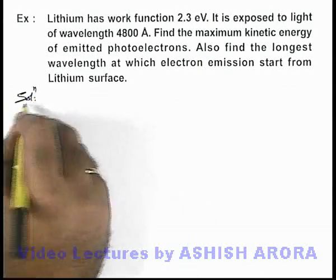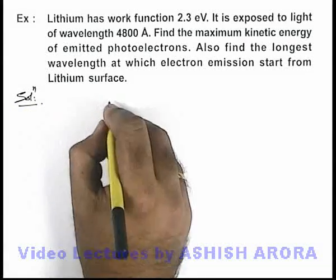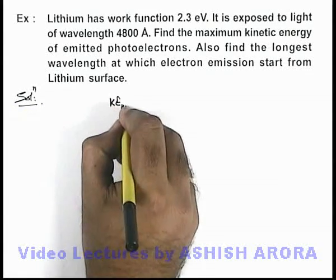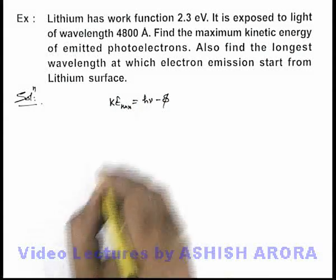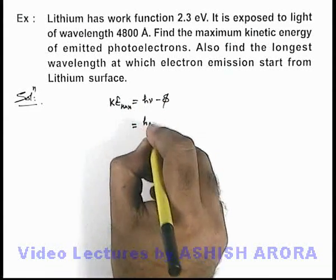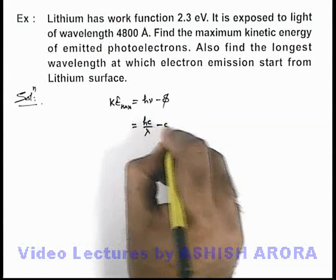In this situation, we can directly write the maximum kinetic energy of emitted electrons as h nu minus phi, and this h nu can also be written as hc by lambda minus phi.